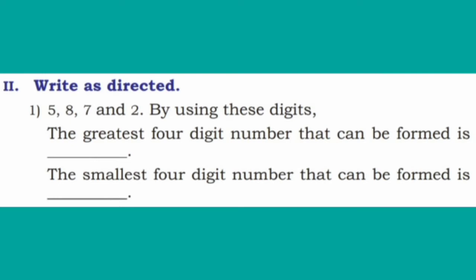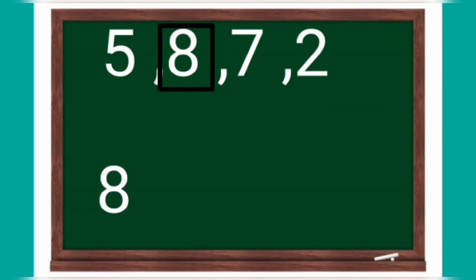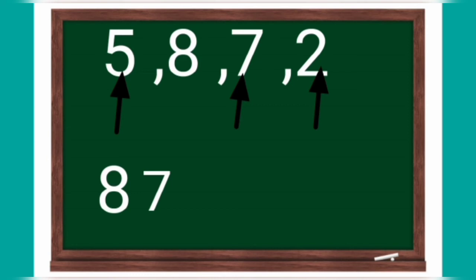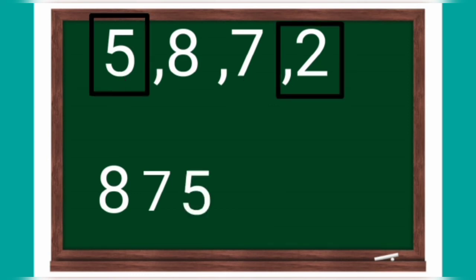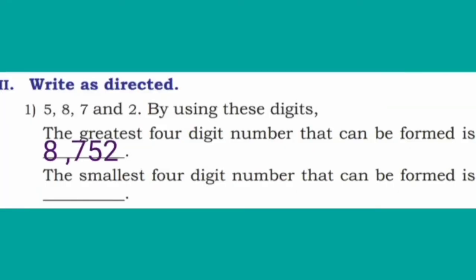Second main: write as directed. First question — using the digits 5, 8, 7 and 2, the greatest 4-digit number that can be formed is: look at the board. Among these, 8 is the greatest. Among the remaining 3 digits, 7 is greater. Among 5 and 2, 5 is greater, and the last number is 2. So the greatest 4-digit number is 8,752. In the same way, arranging from smallest to largest gives 2,578.